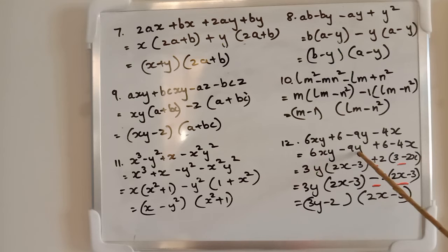In this case, what will we get? What is common here? Factors of 3. So 3 outside and y: 3y(2x - 3). Now there is a plus sign here. So plus, what is common here? The factors of 2. 2 outside: 2(3 - 2x).